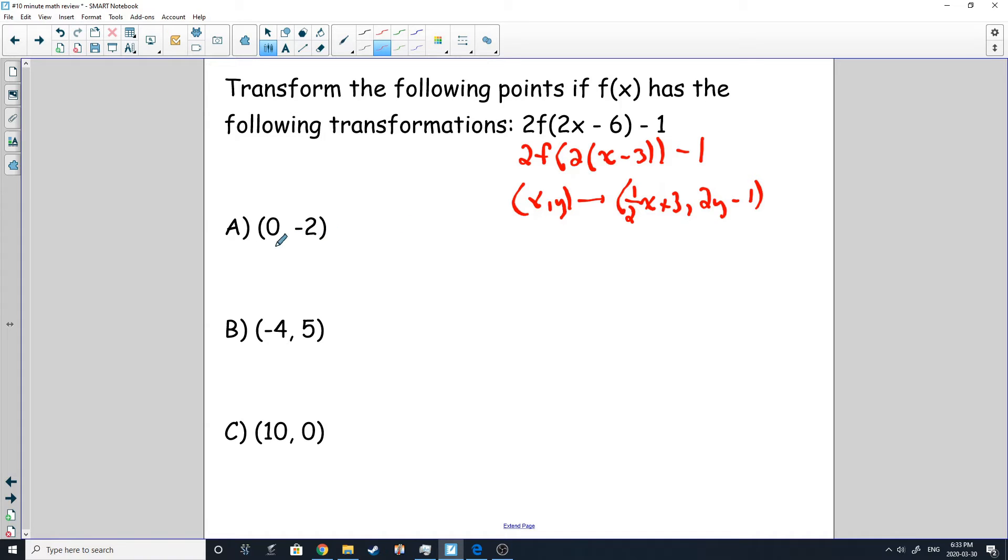We can take our first point here and one half times zero is zero plus three is still just three. And then when we go negative two times two, we get negative four, subtract one, we get negative five.